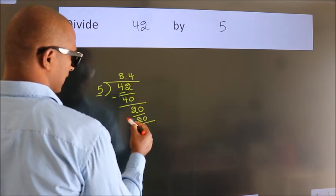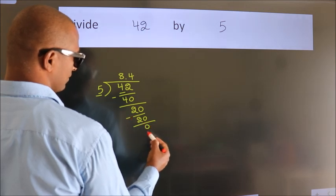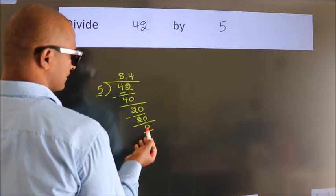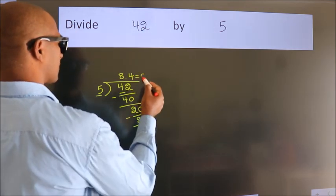Now we subtract. We get 0. We got remainder 0, so this is our quotient.